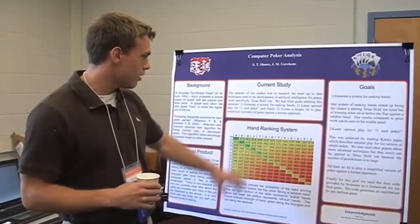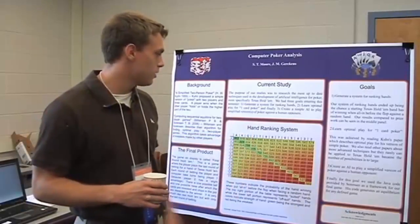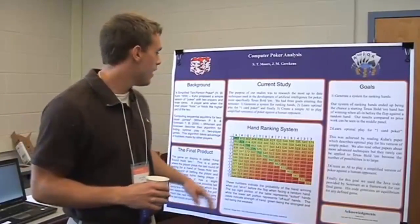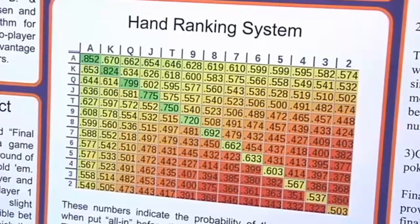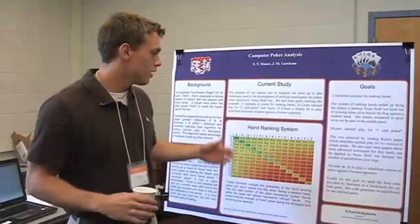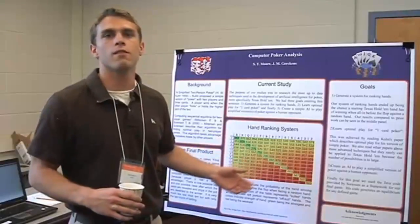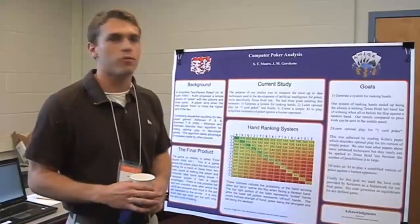If you look at the middle here, it's probably the most eye-catching piece of the poster. It's basically a hand-ranking system. So if you're playing Texas Hold'em and you go all in before the flop, you have this percentage chance of winning against some random hand. It gives you an idea of how strong your hand is before the flop.